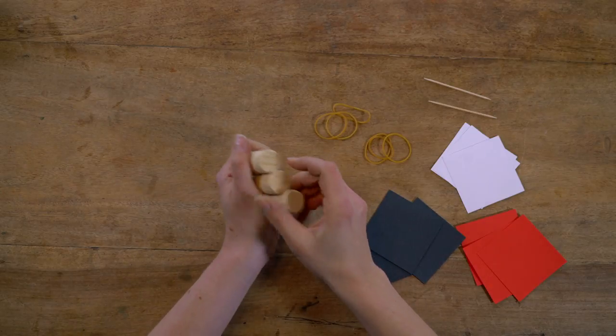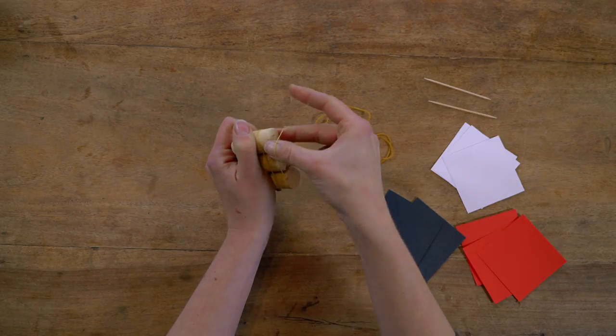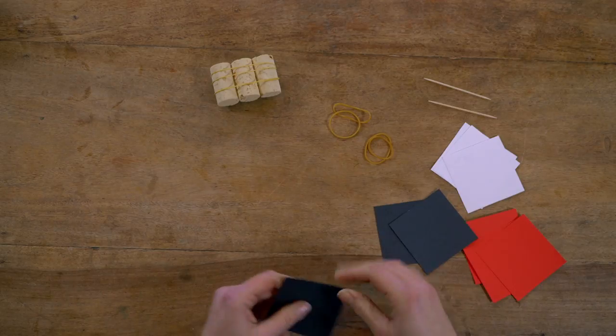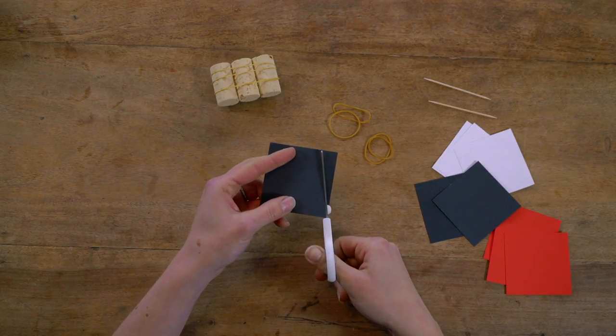Gather your three corks together and secure them with elastic bands at each side. Then cut your sail using some black paper like this.